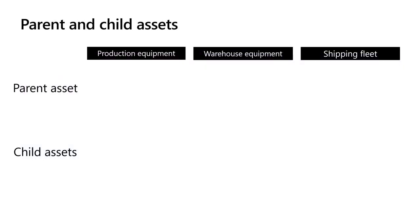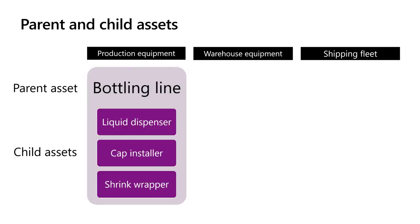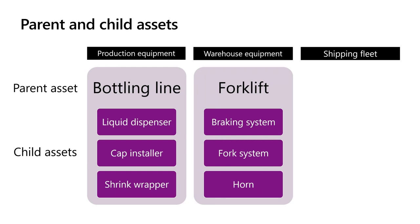Assets can be configured in a hierarchy with parent and child assets as needed by your business. We might do this if we have a machine asset that has components that need to be maintained on a different schedule than the overall machine. For example, if our bottling line is modeled as a parent asset, we might have child assets for our liquid dispenser system, the cap installer, and the shrink wrapper — if we'll sometimes service those three child assets individually and other times service the bottling line all at once. In our warehousing environment, we may have a parent asset for the forklift, which drives our overall annual inspection, but have children assets for the braking system, the forks, and the horn.